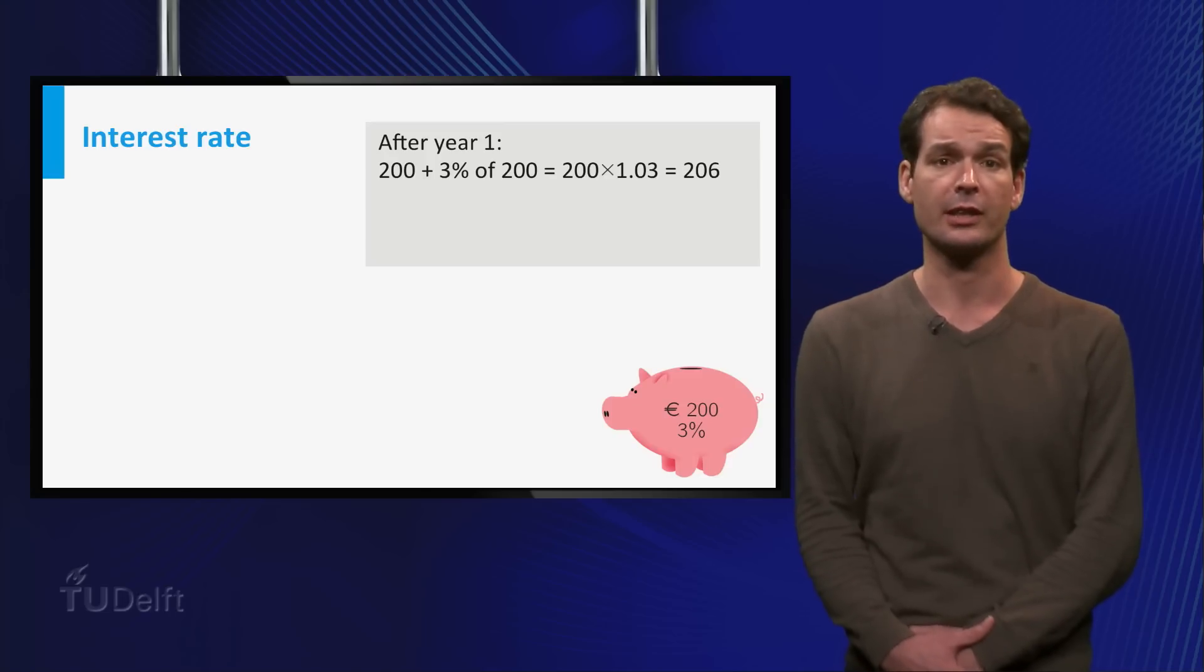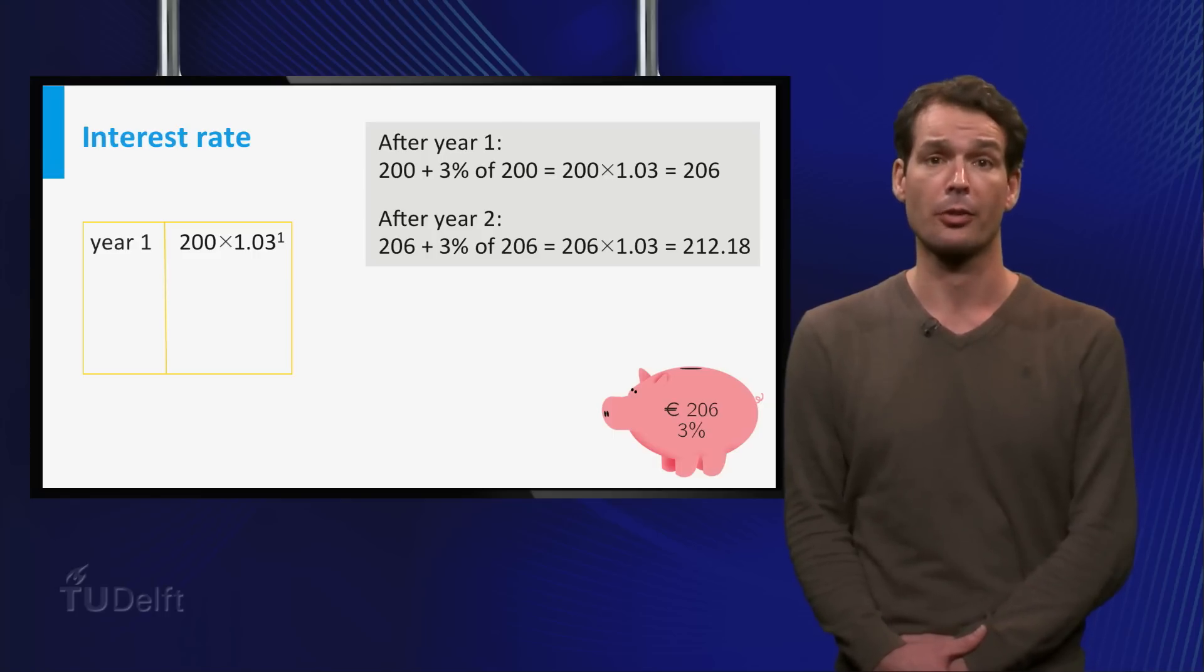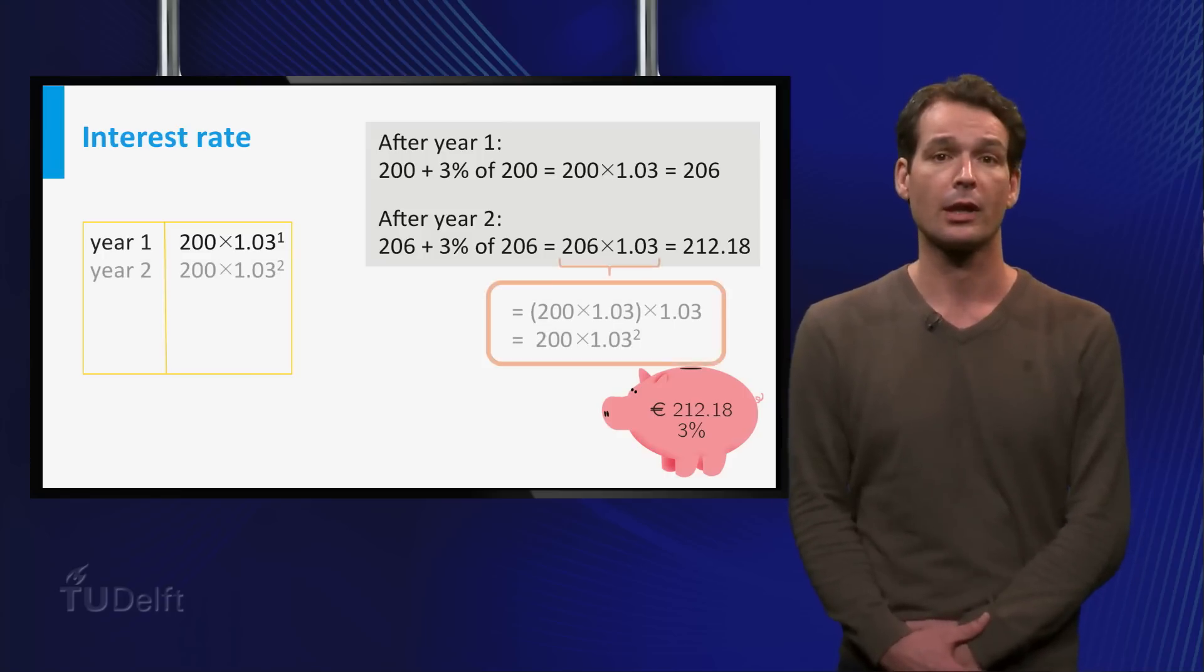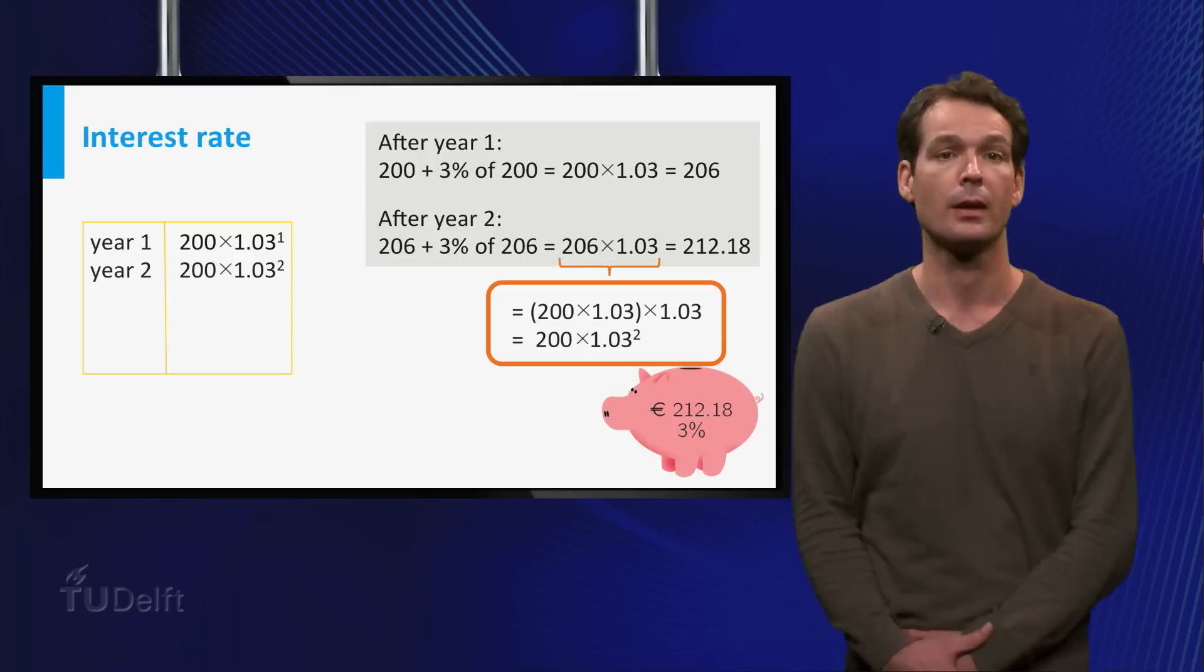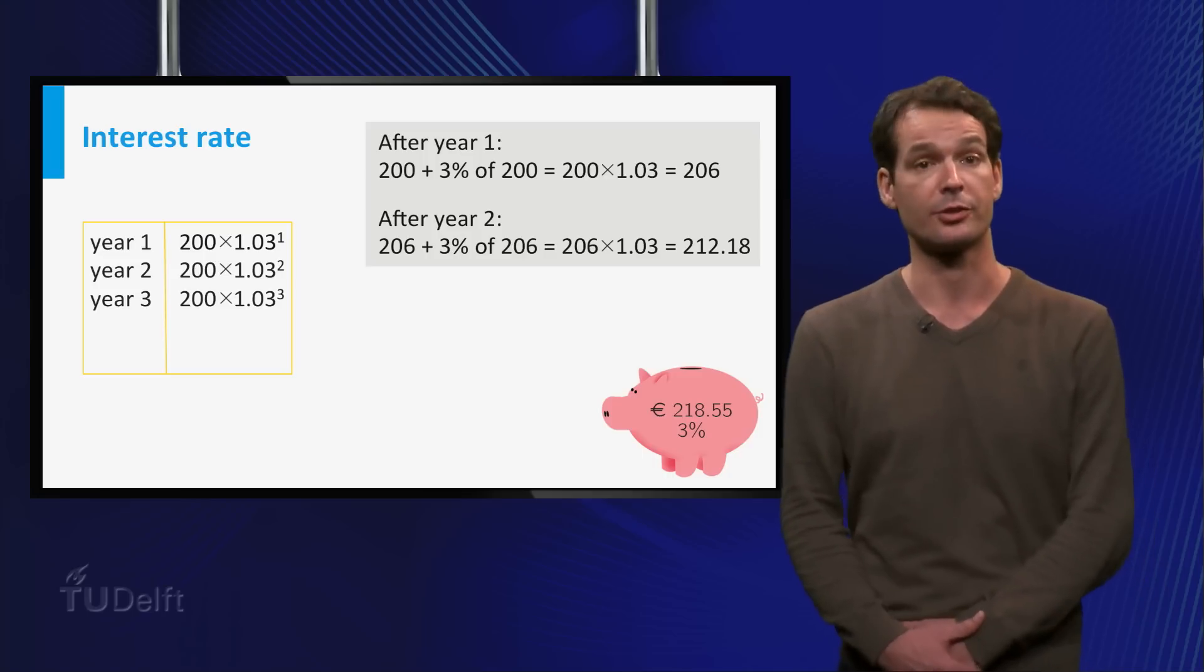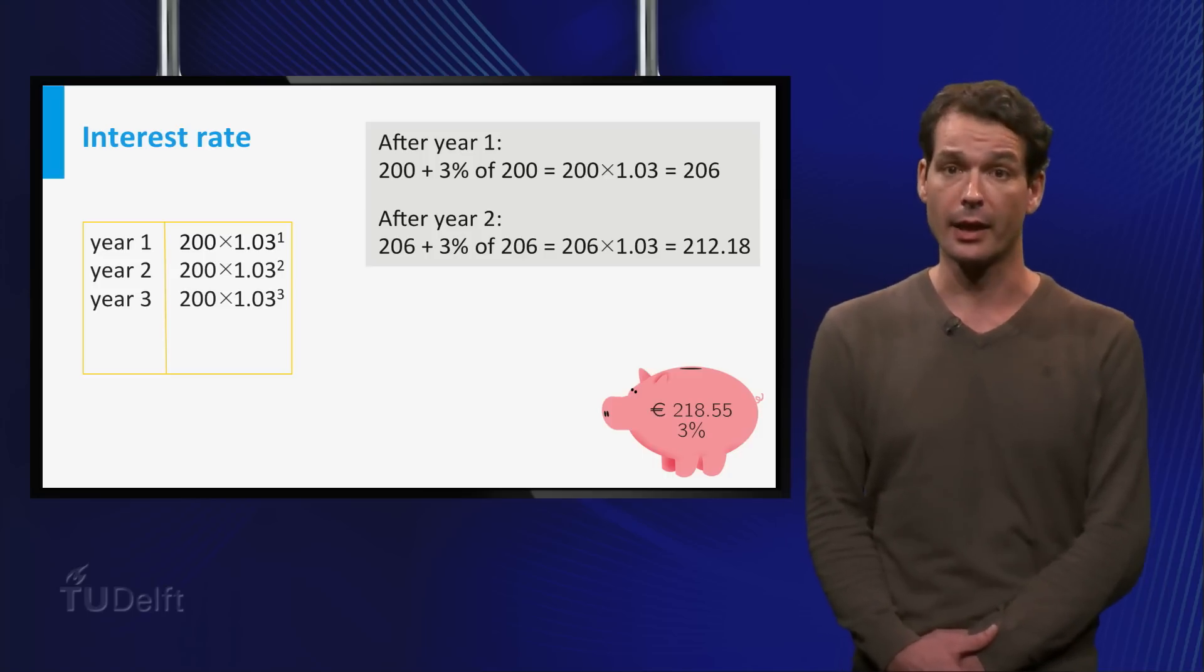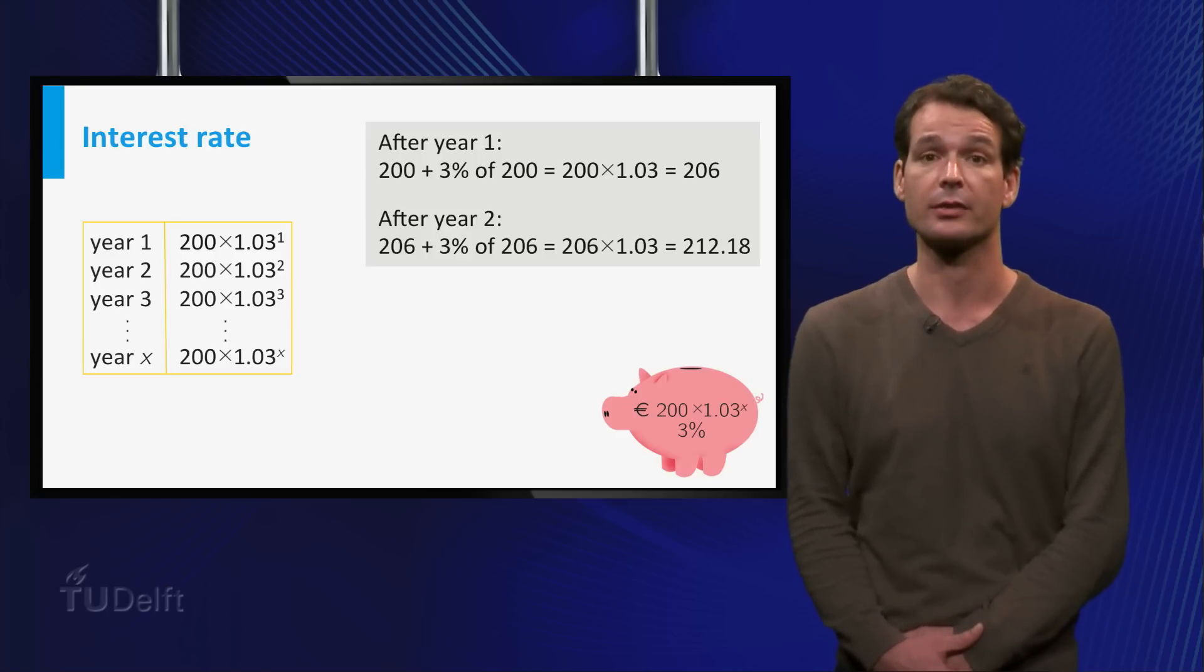After year 2 you get interest over these 206 euros. So 206 times 1.03 equals 212 euros and 18 cents. We can write this as 200 times 1.03 squared. After 3 years you have 200 times 1.03 cubed euros and so on. So after year x you have 200 times 1.03 to the power x euros.